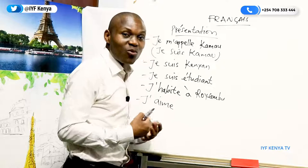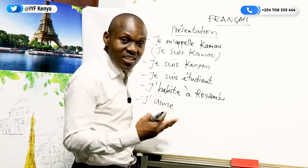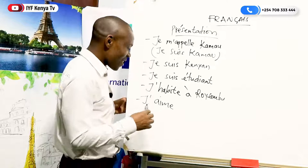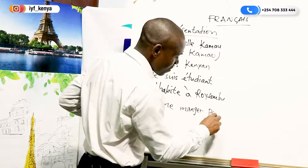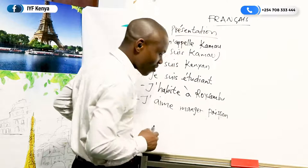J'aime means I like or I love. You can say j'aime, for example, if you like football, playing guitar, playing piano, or eating. If you like eating fish, for example, you say j'aime manger. Manger means to eat or eating in this context. So: j'aime manger poisson, for example. Poisson — j'aime manger poisson.